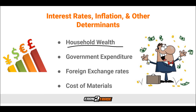The first determinant is household wealth. When looking at economic data, we can come across average household wealth and disposable income. An increase in household wealth generally has a positive impact on aggregate demand, mainly because of greater confidence in the economy, high levels of disposable income, and more willingness to take on consumer debt. When household wealth declines, we will then experience a reduction in consumer debt, due to an increase in consumer savings and a delay in acquiring certain types of goods and services. This has a detrimental impact on the aggregate demand curve.